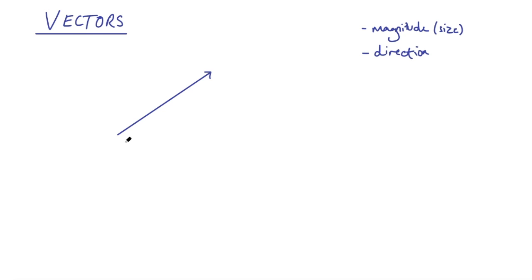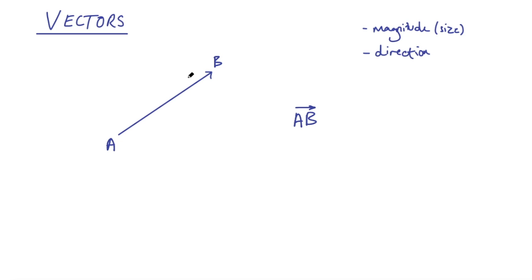So let's talk about some notation. We could have a vector starting at a point A and ending at a point B. One way to write this vector is AB with a little arrow on top, saying the vector is going from A to B in this direction. Another way to describe vectors is to label them with a bold letter. In handwriting it's difficult to write bold letters, so sometimes you might see vectors written with a little hat on top.